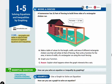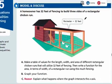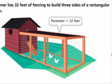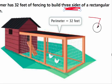Let's look at the model and discuss. A homeowner has 32 feet of fencing to build three sides of a rectangular chicken run. It does say that the perimeter is 32 feet, but notice it is just talking about three sides of the rectangular fence. So the perimeter of these three sides totals 32 feet.